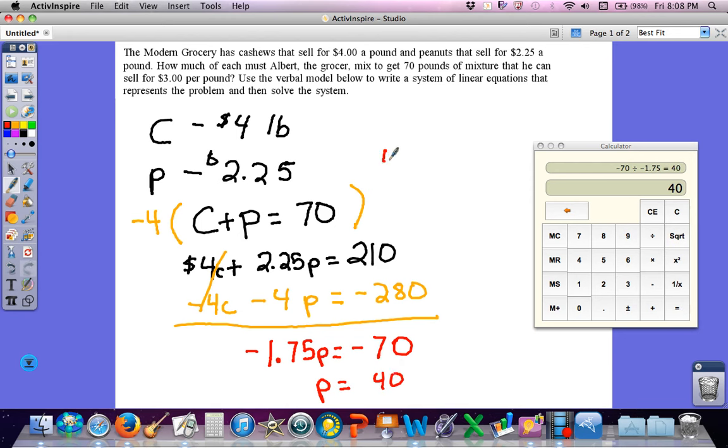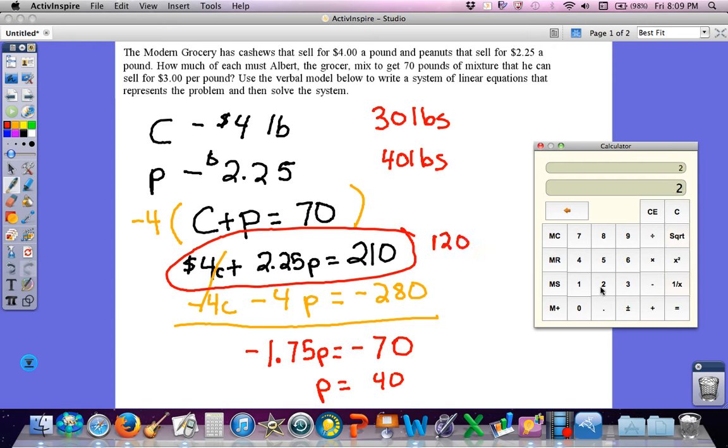So if peanuts are 40 pounds and I have a total of 70 pounds, cashews must be 30 pounds. Let's check and see if that works in this equation here. So 4 times 30 is 120, 2.25 times 40 is 90, and 120 plus 90 is 210. It checks out.